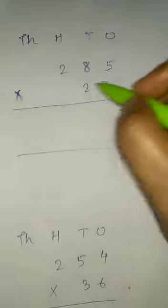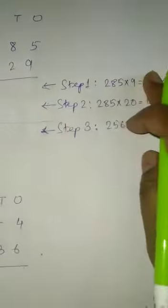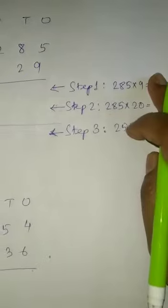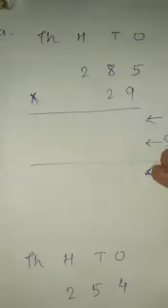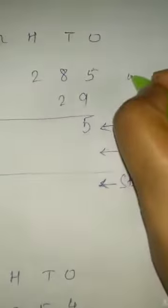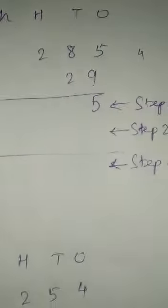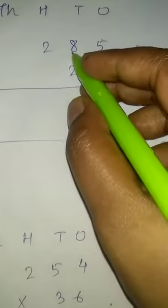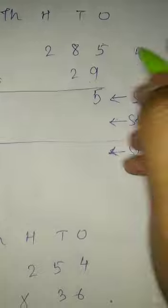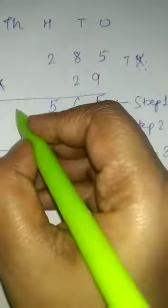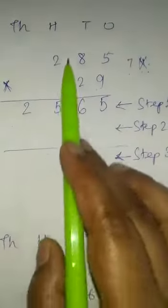You see students, 285 will be multiplied with 29. Here I have written the question step-wise: 285 multiplied by 9, and 285 multiplied by 20. At last we will add those two numbers. Let us start the multiplication. 9 fives are 45 — write 5, carry 4. 9 eights are 72, plus 4 is 76 — write 6, carry 7. 9 twos are 18, plus 7 is 25 — write 5 in the hundreds place and 2 in the thousands place.